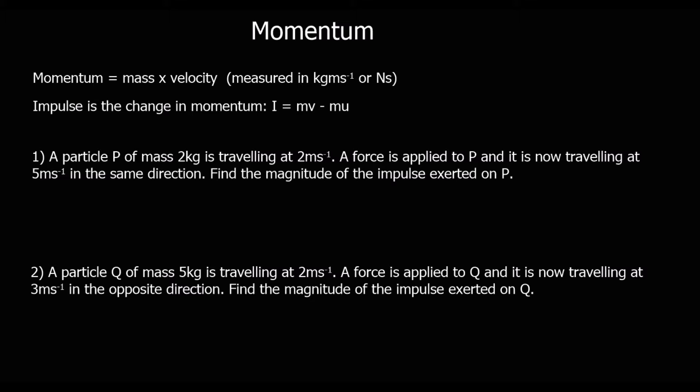Here we've got two questions about impulse and we're going to have a look at these examples. A particle P of mass 2 kilograms is traveling at 2 meters per second. So the initial velocity is 2. A force is applied to P and it's now traveling at 5 meters per second. So V is 5 in the same direction.